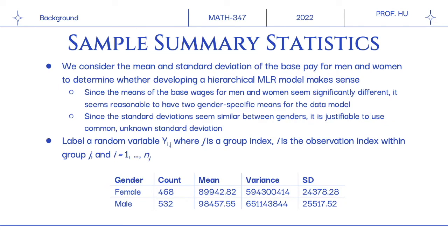We wish to go beyond the MLR model, so we considered the mean and standard deviations of base pay grouped by gender. As we can see, there's about a $10,000 difference in favor of men with similar standard deviations. It's justifiable to use a hierarchical representation, the group-specific model, and a shared standard deviation.